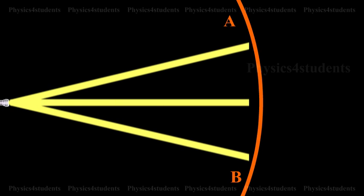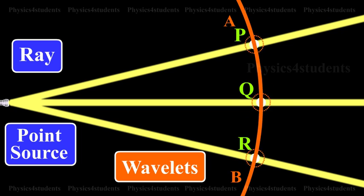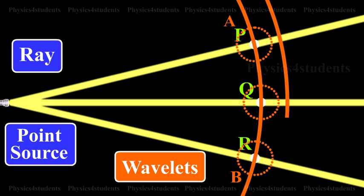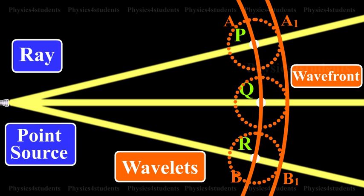Huygens's Principle states that every point on a given wavefront may be considered as a source of secondary wavelets which spread out with the speed of light in that medium, and the new wavefront is the forward envelope of the secondary wavelets at that instant.